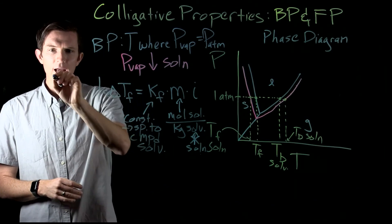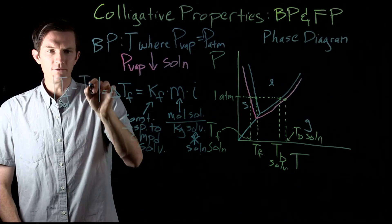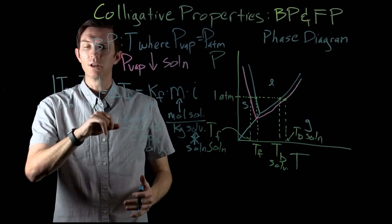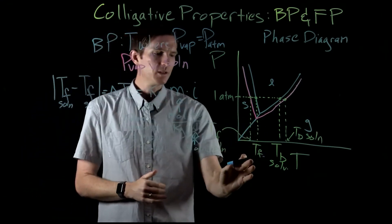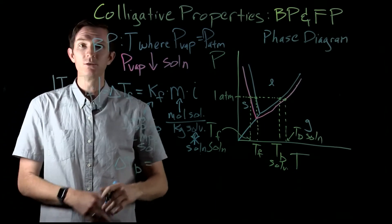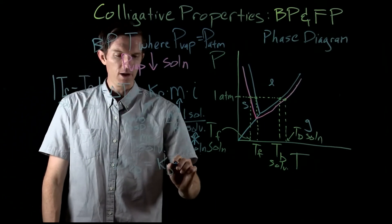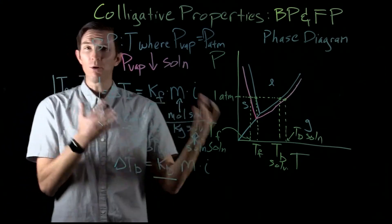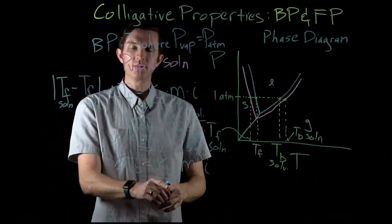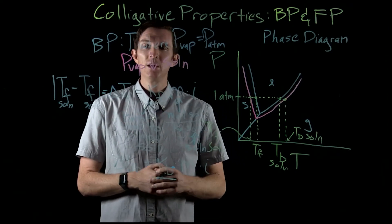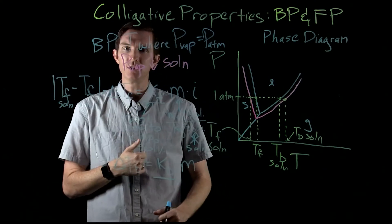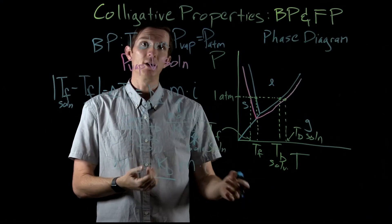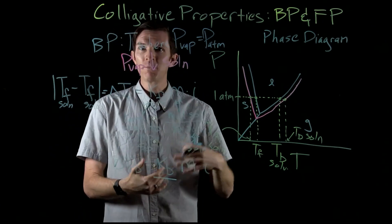The change in freezing point equals the absolute value of the freezing point of the solution minus the freezing point of the pure solvent — and it is always lower for the solution. For boiling point elevation, the change in boiling point equals the boiling point elevation constant K_b times the molality times the Van't Hoff factor. K_b and K_f are different constants, each specific to the solvent. In a further video, we'll calculate changes in freezing point, boiling point, and vapor pressure, and also look at osmotic pressure.